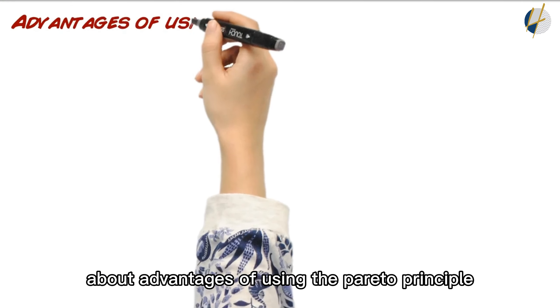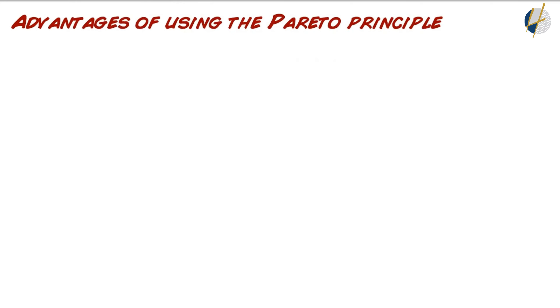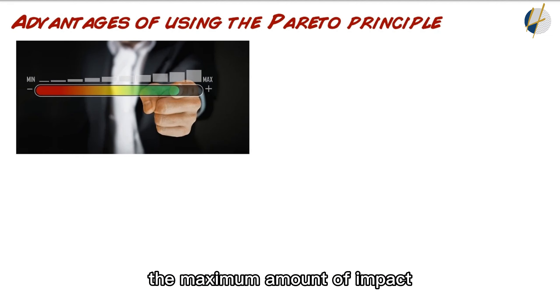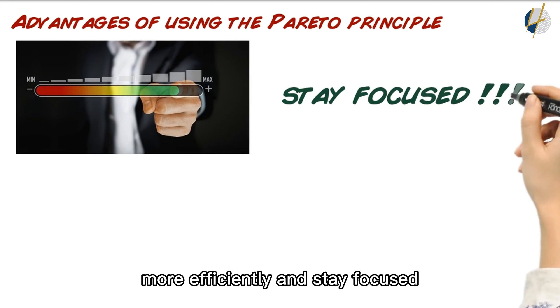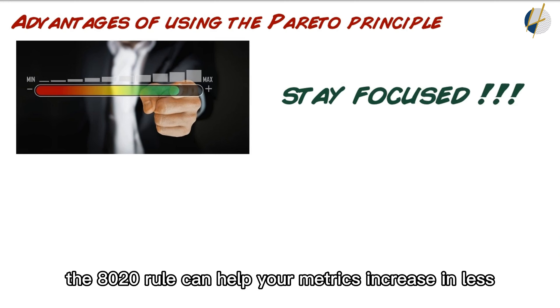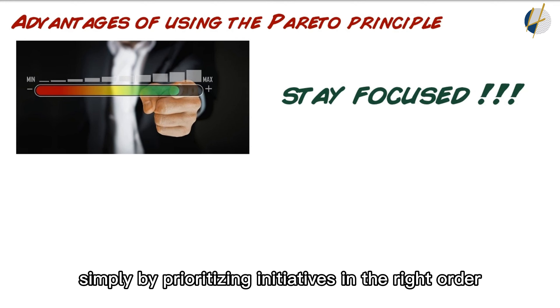Now we're going to talk about the advantages of using the Pareto Principle. The biggest advantage of using the Pareto Principle is that you can create the maximum amount of impact with the least amount of work. This can allow your team to work more efficiently and stay focused on specific initiatives. The 80-20 rule can help your metrics increase in less time simply by prioritizing initiatives in the right order.